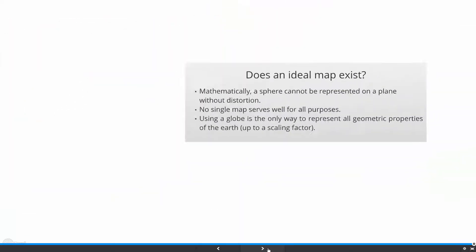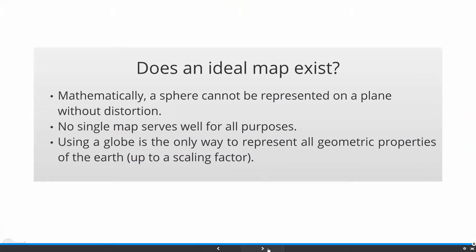So our final question is, does an ideal map exist? Mathematically, a sphere cannot be represented on a plane without distortion. No single map serves well for all purposes. Using a globe is the only way to represent all geometric properties of the Earth.